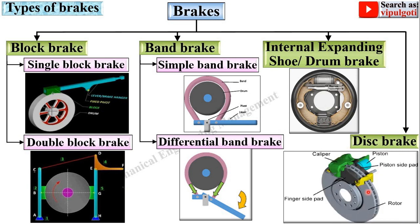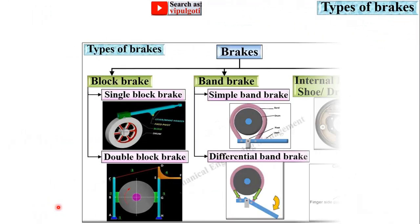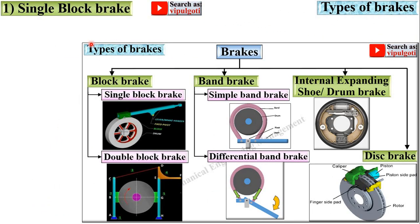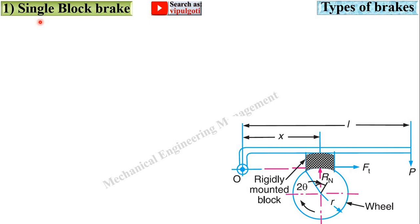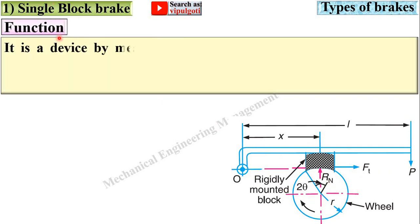And finally, disc brake — here you can see the disc is used, that's why it is called the disc brake. We will see all these brakes one by one. Let's start with the single block brake. In this figure you can see the single block is used, that's why it is called the single block brake.